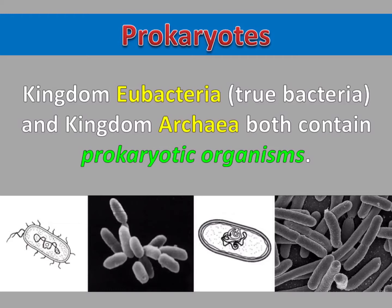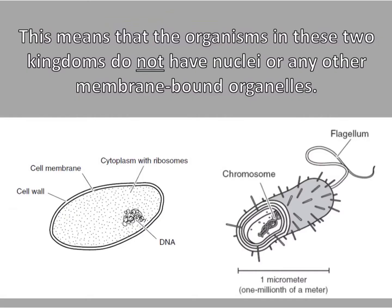Kingdom Eubacteria, which means true bacteria, and Kingdom Archaea both contain prokaryotic organisms. Every single species that's a member of one of these two kingdoms is a prokaryote. This means that the organisms in these two kingdoms do not have nuclei or any other membrane-bound organelles. You can see in these diagrams that these prokaryotes have a single chromosome which is not stored inside of a nucleus.